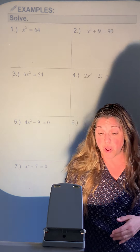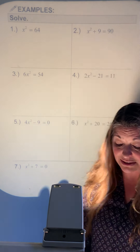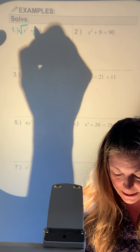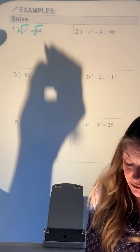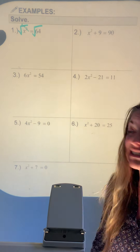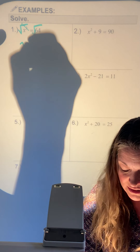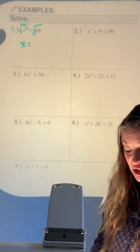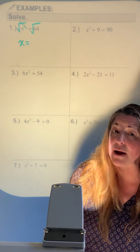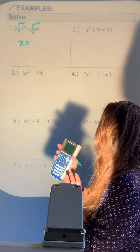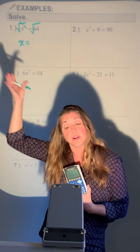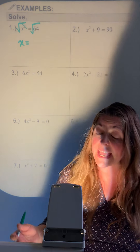For number 1, x squared is already alone — awesome. We can just go ahead and square root right away. We should remember that 64 is a perfect square; if not, grab a calculator and square root 64. The answer is 8.